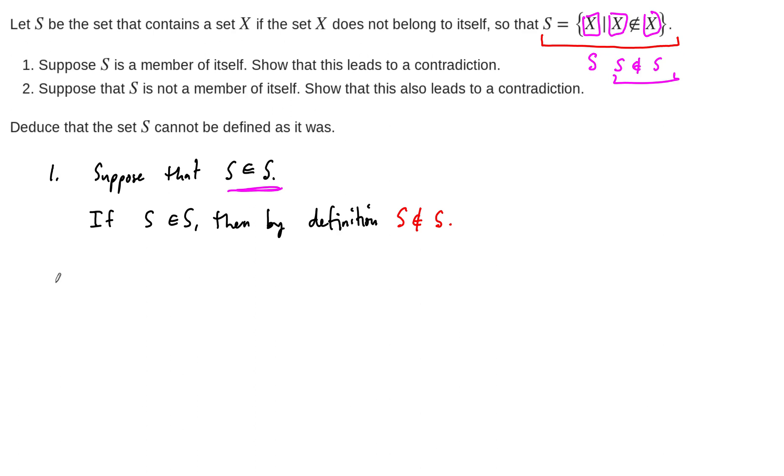So then we go to number two. Well, we just showed that if S is a member of itself, everything breaks down. The whole situation breaks down if we assume that S is a member of itself. So now what we do is we suppose that S is not a member of itself. And then we go back and think about this definition again.